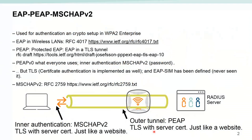So what is EAP-PEAP MSCHAPv2? It's a combination of a few protocols. First of all we have the EAP protocol, which is used to do something called 802.1x, and 802.1x is widely used in both wireless and wired. When we use it in wireless, we use it in combination with WPA2 Enterprise. EAP, the Extensible Authentication Protocol, defines how a client can securely authenticate to the network, and that's mostly done with a RADIUS server to do the authentication.